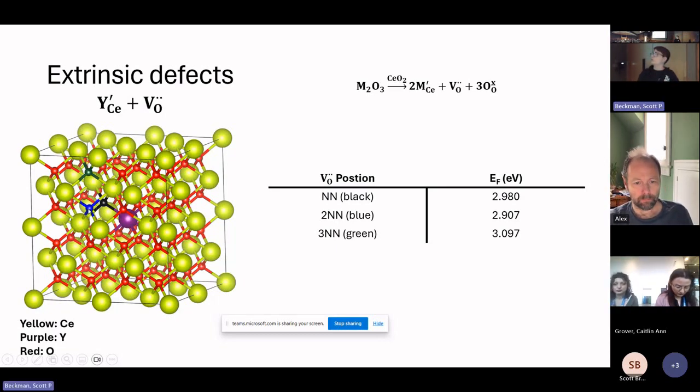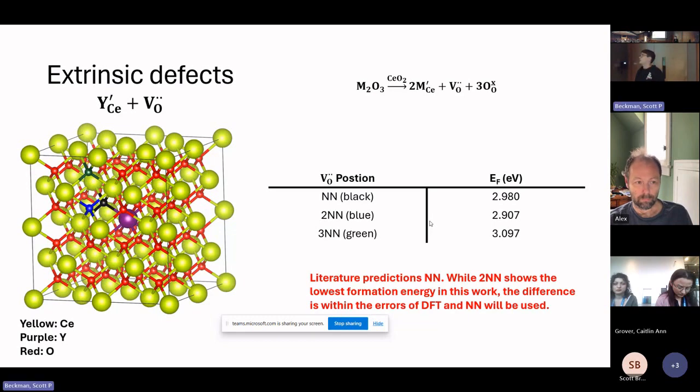and green is a third nearest neighbor. In calculating the binding energies for these three different cases, what you can see is that a second nearest neighbor and the nearest neighbor are the lowest in energy, while the third nearest neighbor is the higher energy. Within the literature, the nearest neighbor has been found to be the more favorable formation. Within the errors of DFT though, the second nearest neighbor and nearest neighbor are essentially going to both be favorable. To stick with what is found in the literature, I've considered nearest neighbor.